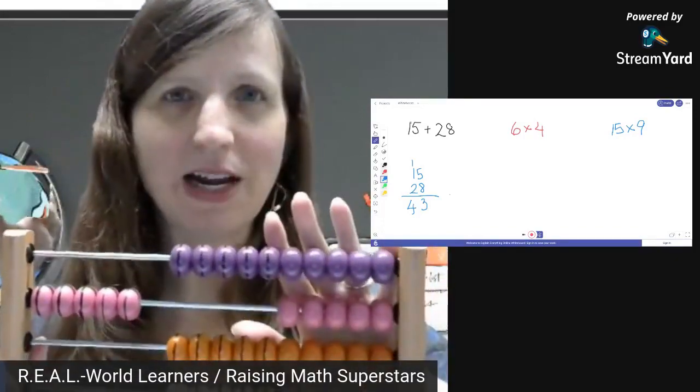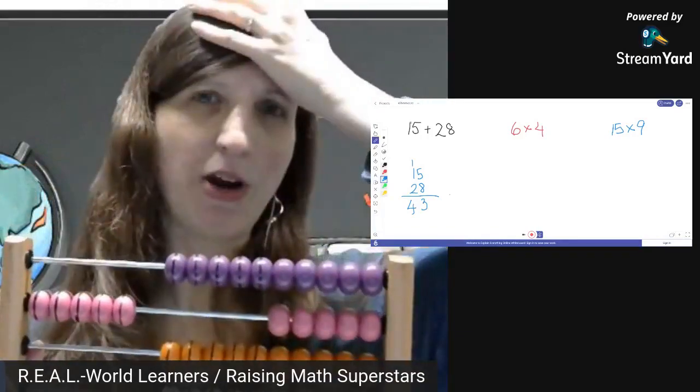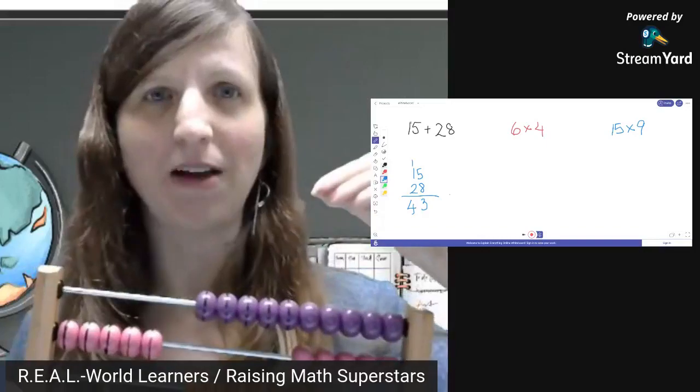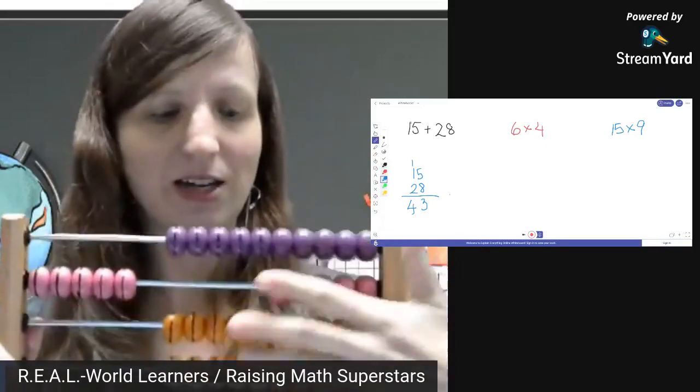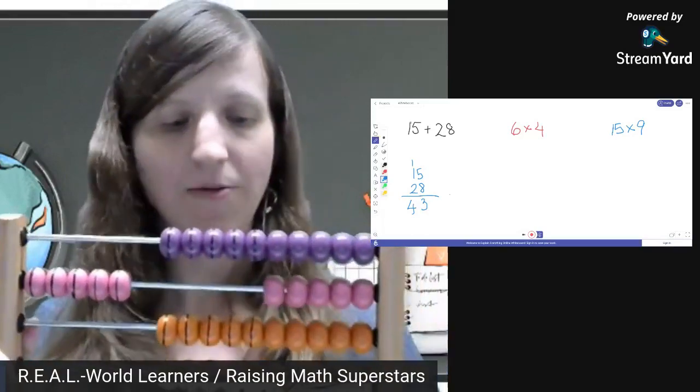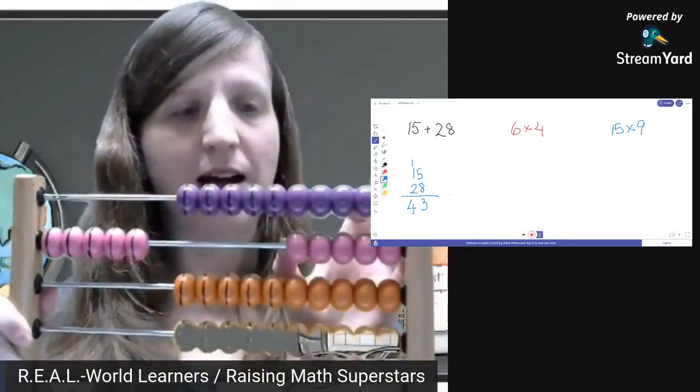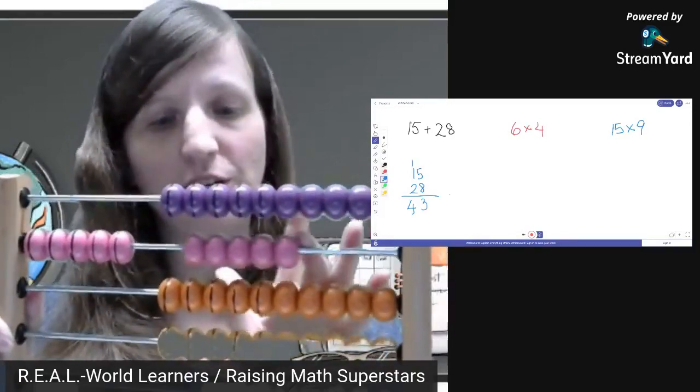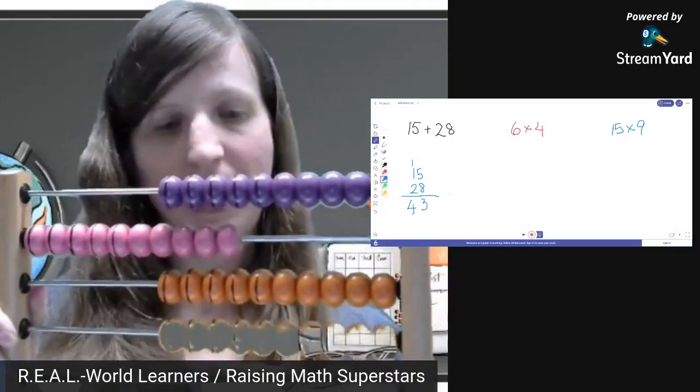You do it enough times with your hands so that this gets imprinted on your brain. When you close your eyes, the number 15 looks like 10 beads and 5 more beads. 28 looks like 2 rows of 10s, and an 8, which looks like a 5 and 3. Then, they know that this 5 and this 5 combine to make a 10, so you can do the exchanging with adding a 5 in there.